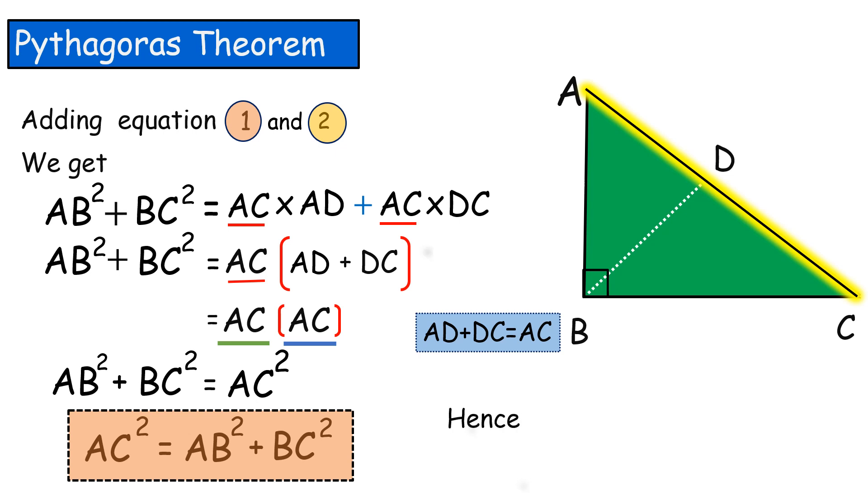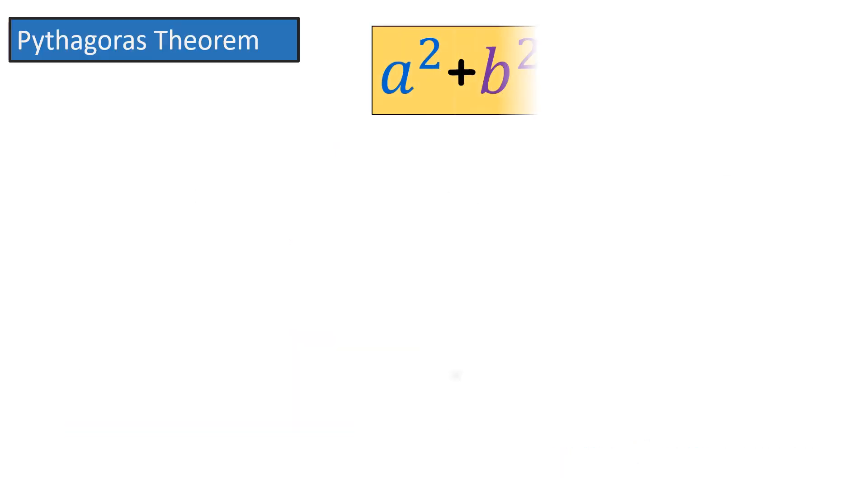Hence, Pythagoras theorem proved. This theorem is used to find the length of unknown side of the right-angled triangle.